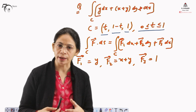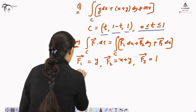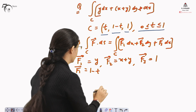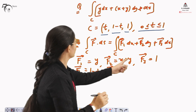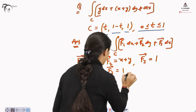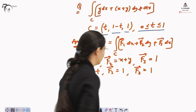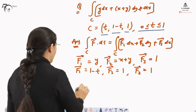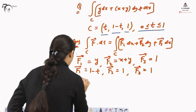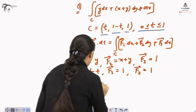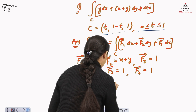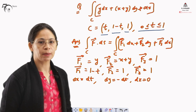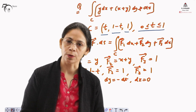We need to convert the integrand in terms of parameter T. F1 is Y, and the Y component is 1 minus T, so F1 becomes 1 minus T. F2 is X plus Y, which is T plus (1 minus T), so F2 becomes 1. F3 is 1. For the differentials: dX equals dT, so dX/dT equals 1; dY equals minus dT, so dY/dT equals minus 1; and dZ equals 0, so dZ/dT equals 0.